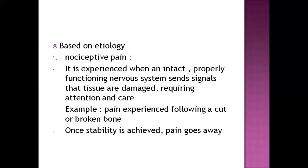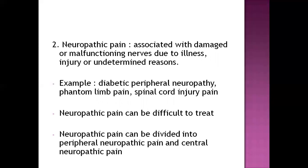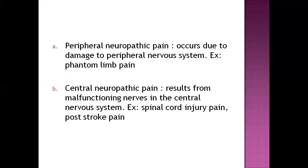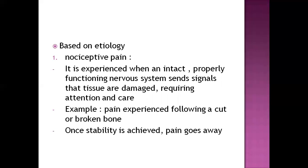Based on etiology, pain can be divided into nociceptive pain, somatic pain, visceral pain, and neuropathic pain — both peripheral and central. Nociceptive pain is experienced in an intact, properly functioning nervous system whose sense nerves signal that tissue is damaged and requires attention. An example is pain following a cut injury or fracture — broken bone. After such an injury, the brain sends messages in the form of neurons to repair or react to that part, the body responds, and once stability is achieved the pain goes away.